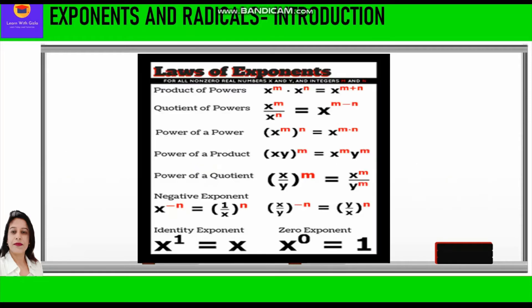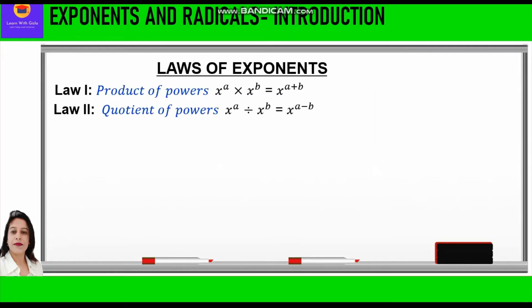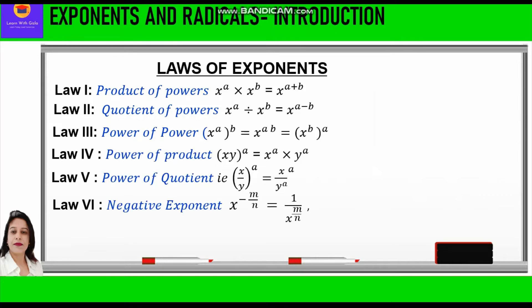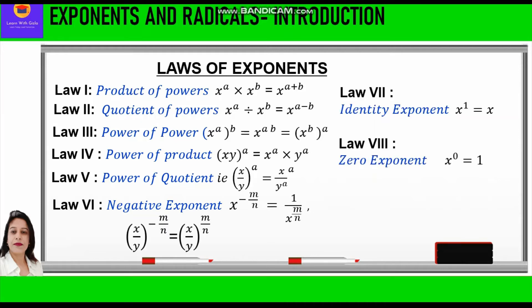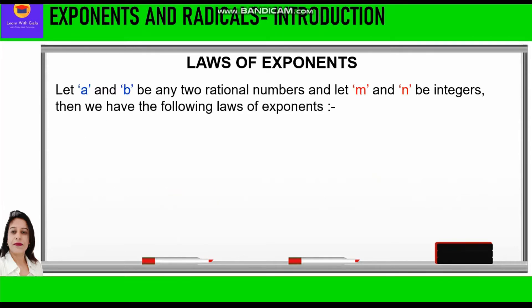Now let us study about laws of exponents. There are various laws of exponents: product laws, quotient laws, power of a power, power of a product, power of a quotient, negative exponent, identity exponent, and zero exponent. Now let us study each one of them in detail. Let a and b be any two rational numbers and let m and n be integers. Then we have the following laws of exponents.